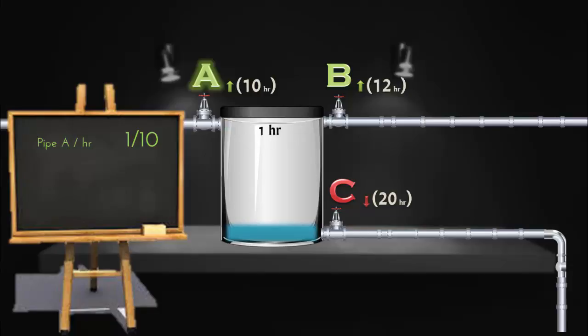The same way, Pipe B fills the container in 12 hours. So, part of the container filled by Pipe B in 1 hour is 1 by 12.